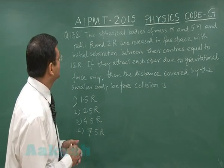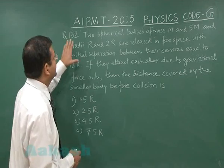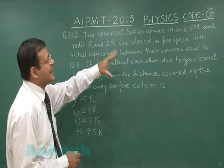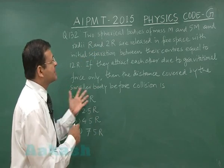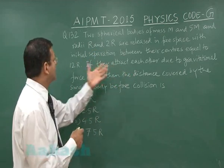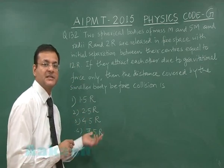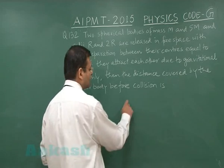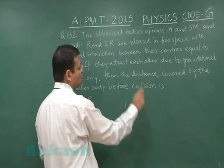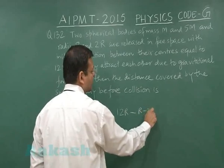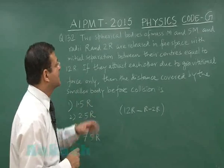Question 132 is a concept of center of mass. It says that two spherical bodies of mass m and 5m, and radii r and 2r, are released in free space with initial separation between their centers equal to 12r. The center-to-center separation is 12r, but if you subtract their radii r and 2r, that gives you the surface-to-surface distance between these two masses.